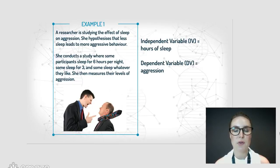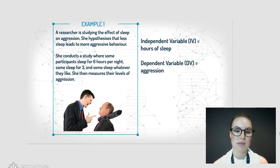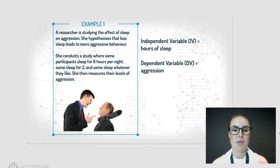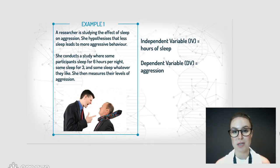We have a research experiment on the left here where a researcher is studying the effect that sleep has on aggression. Some people sleep six hours a night, some people sleep for three, some whatever they like, and then she measures their level of aggression. In this situation the independent variable is the hours of sleep — that's the variable she's changing because she wants to see if it has an impact on aggressive behavior. That then makes our dependent variable aggression. So aggression depends on the hours of sleep, and that's what she's hypothesized as well.